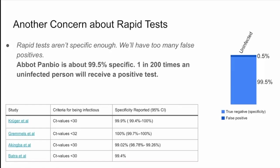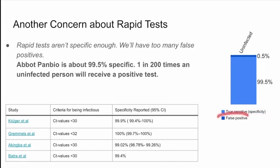A typical number is 99.5% specific. What that means is that if you had a group of 200 uninfected individuals, 199 of them would come out as getting a negative rapid antigen test result, and one out of those 200, or 0.5%, would falsely be identified as positive. This true negative rate is what we call the specificity — the higher that is, the better. The rest would be false positives.